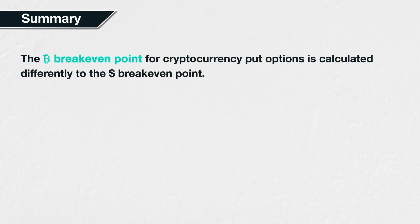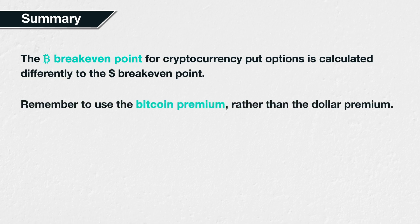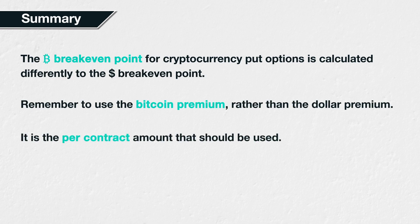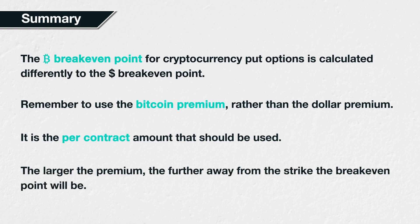In summary, the break-even point for cryptocurrency put options is not calculated in the same way as for dollar options, so it's important not to confuse the two calculation methods. Remember to use the bitcoin premium of the option rather than the dollar equivalent, and it is the per-contract amount that should be used regardless of the actual position size. The larger the premium of the option, the further away from the strike price the break-even price will be — for put options, this means a lower price.